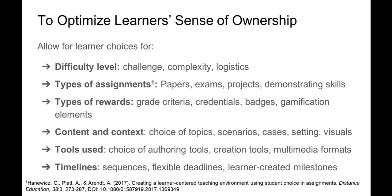We can also provide choice in the types of rewards students can earn. A common example is contract grading, where students are told upfront what is required for each grade level — what's required for an A, what's required for a B, etc. — and students can choose what grade they want to earn. Other examples include giving options to earn credentials or badges by meeting certain criteria, or including gamification aspects so that students can choose to engage in a gamified way.